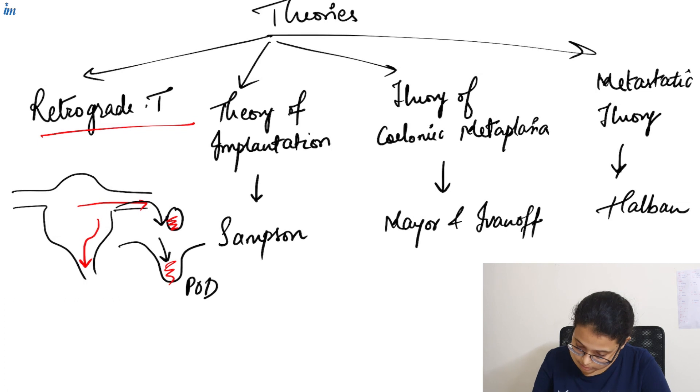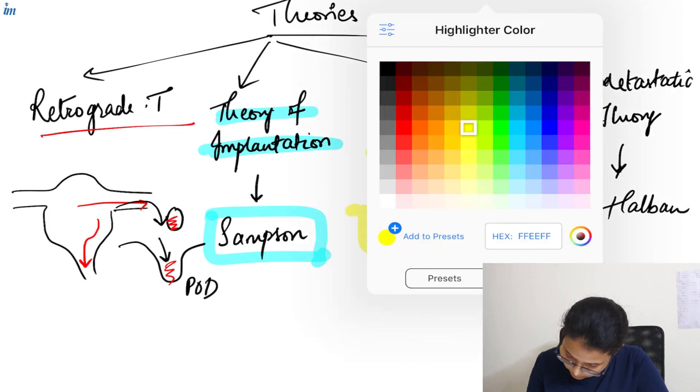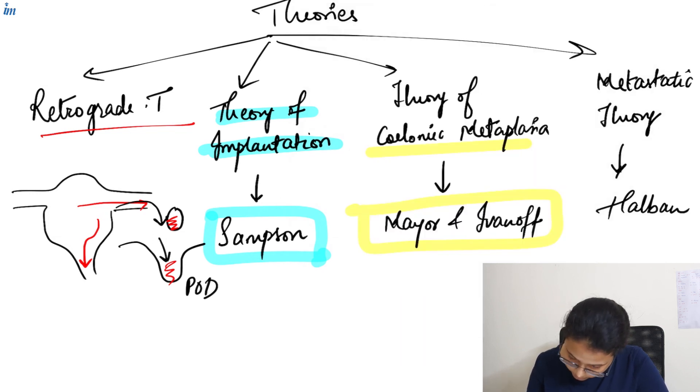Then, we have theory of implantation given by Samson. Then, we have another theory given by Meyer and Iwanoff, that is theory of coelomic metaplasia. Then, we have metastatic theory given by Halban.